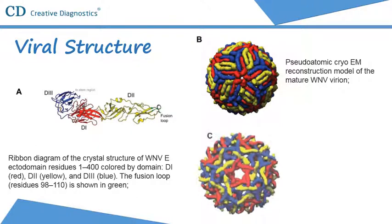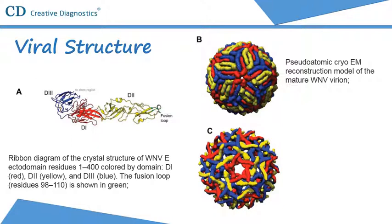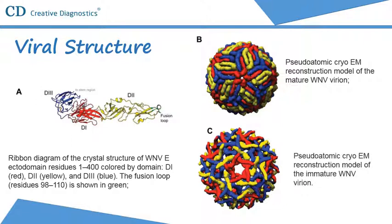Immature West Nile virus virions have a distinct structural composition relative to the mature virion. Unlike the mature virion, the immature virus maintains 180 copies of uncleaved prM protein non-covalently associated with each E protein.